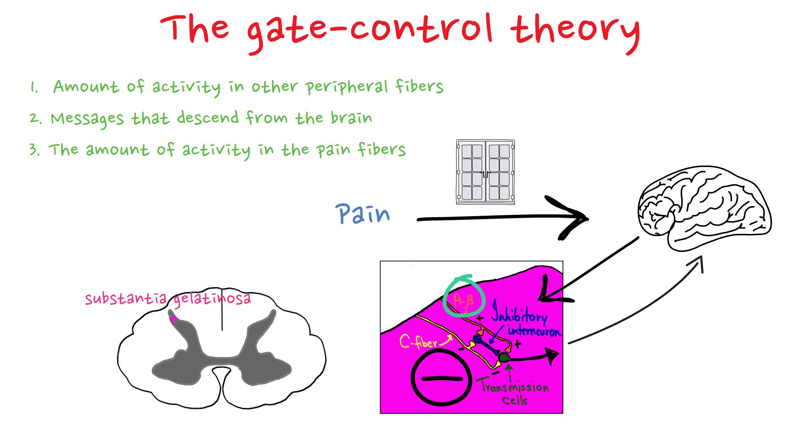Don't confuse A-delta fibers with A-beta fibers. A-delta is a fast pain fiber, and A-beta fiber is touch, mild irritation fiber.